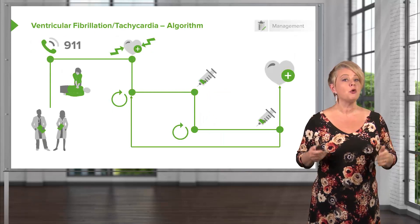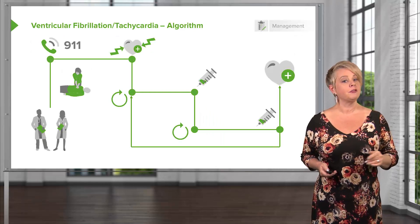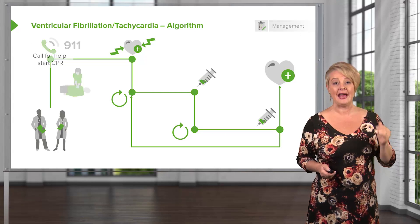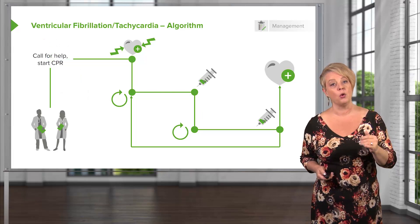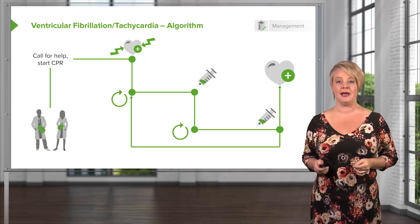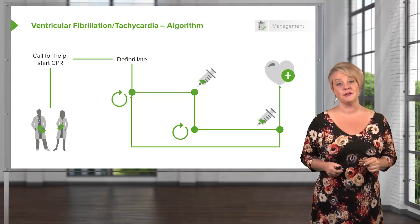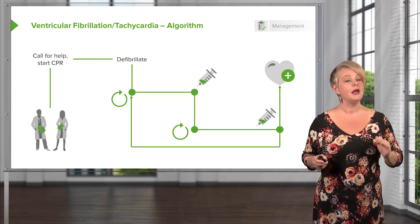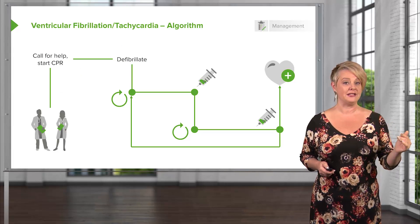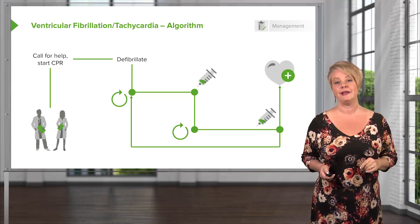Now let's go through the V-fib and V-tach algorithm in detail. First and foremost, when you have a cardiac arrest, you want to get help right away and initiate the highest quality CPR you can possibly manage. Your next priority is to get your hands on a defibrillator as quickly as you can and administer a shock for V-fib or V-tach. We don't shock other rhythms, but for these rhythms, electricity is key.